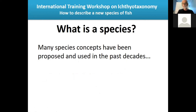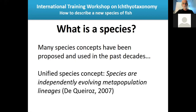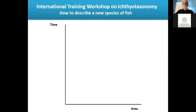So, what is a species? Many species concepts have been proposed and used in the past decades, coming from different threads of biology. You probably have dozens of species concepts. More recently, in the last two or three decades, species concepts have converged to ideas of lineage. Kevin de Queiroz presented in 2007 this unified species concept, where he said species are independently evolving metapopulation lineages. In summary, the species is a single lineage of populations.